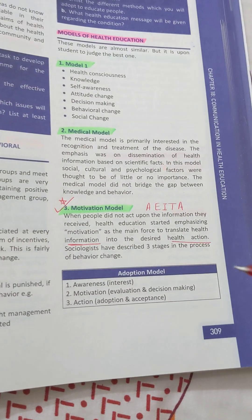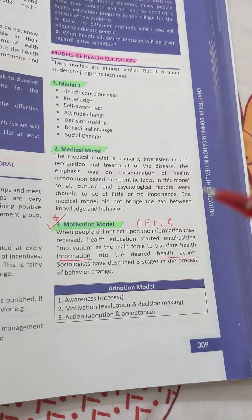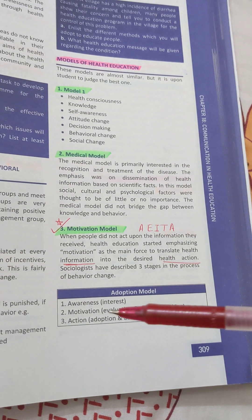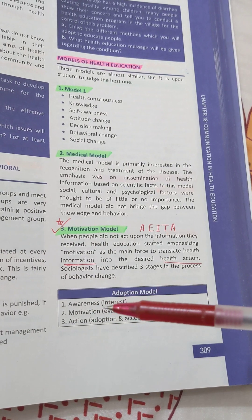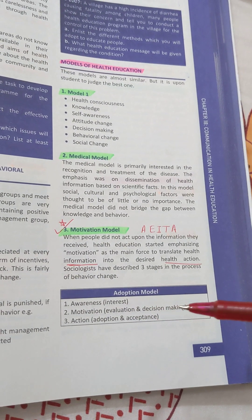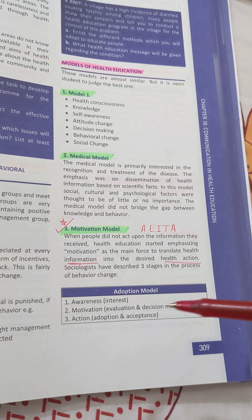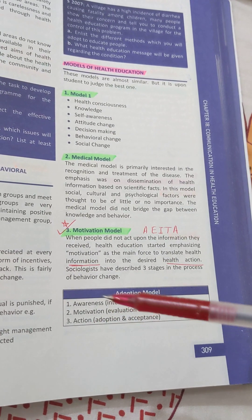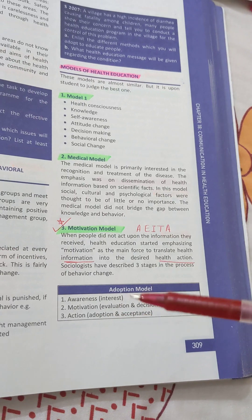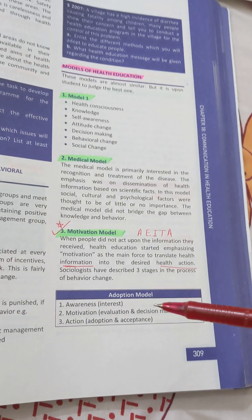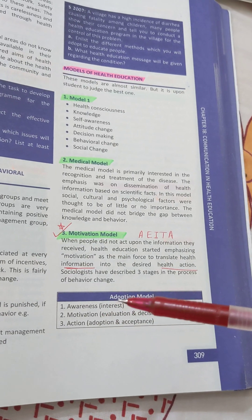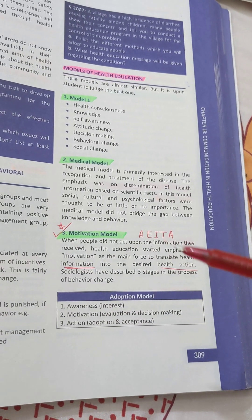Behavior change has three important stages. Number one is awareness, in which interest is developed. Then motivation, based on that interest and awareness, in which we evaluate the process and make decisions. And then, based on that motivation, we take action — adopting and accepting the process. So awareness, motivation, and action are the three stages in the process of behavior change.